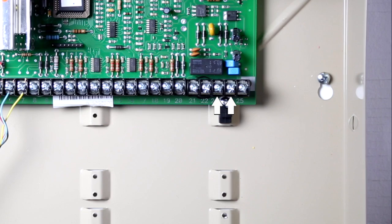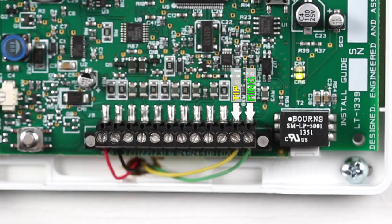Identify the telco connection on the host alarm panel. Directly connect the T and R terminals on the Cellcom SL's terminal strip to the host panel's incoming tip and ring.